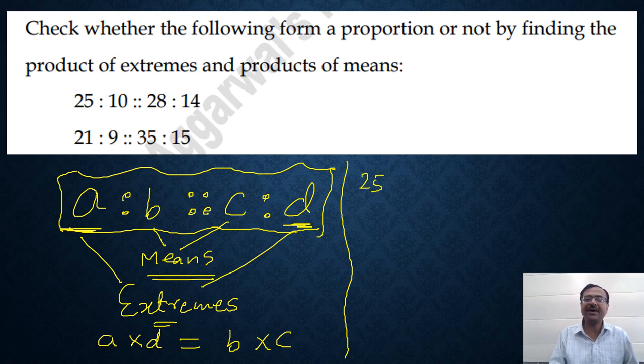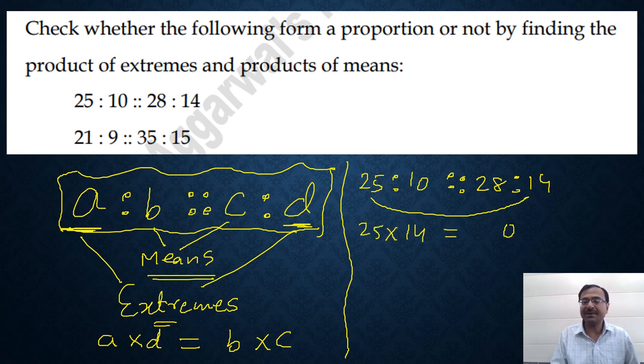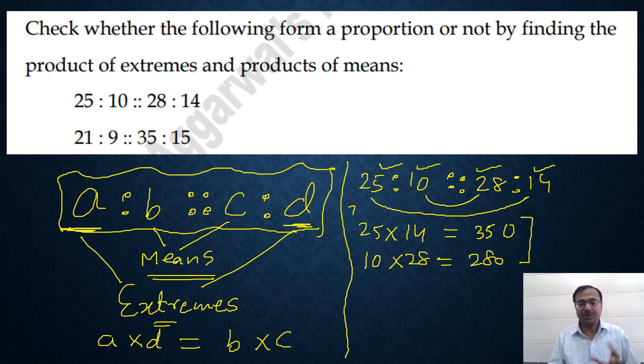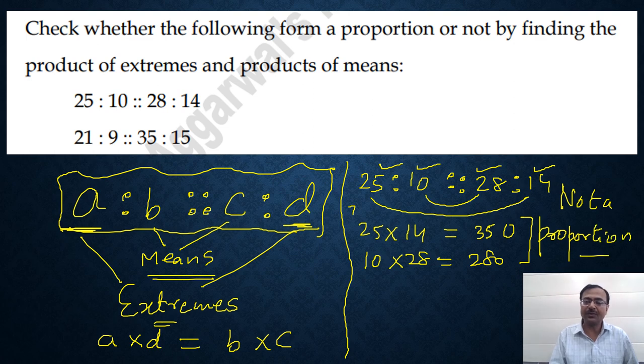Let's see the first question - 25 ratio 10 and 28 ratio 14. If you see the product of 25 and 14, that is the product of extremes, then 14 by 25 is 7 and 14 times 2 is 28, so 350. Whereas the product of means, that is 10 and 28, it is 280. These two products are not equal and therefore, this equality of two ratios is not a proportion. So very simple method through which you can identify whether four given numbers form a proportion or not.